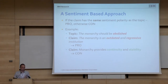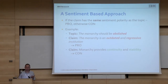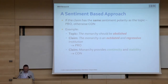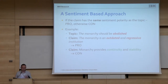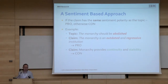We start with a sentiment-based approach, which we hope will work in most cases. The idea is that if the topic and the claim have the same sentiment polarity, then it's a pro claim; if they have the opposite sentiment polarity, then it's a con claim. For example, the topic 'the monarchy should be abolished' has negative sentiment, and the claim 'the monarchy is outdated and regressive' also has negative sentiment, so it's a pro claim. And 'monarchy provides continuity and stability' has positive sentiment, so it's a con claim.